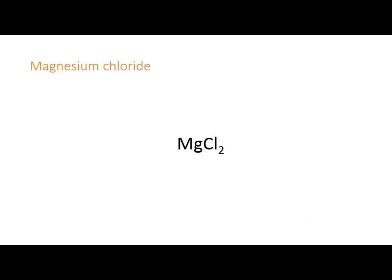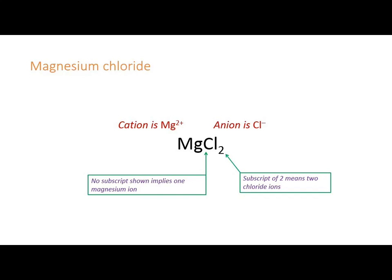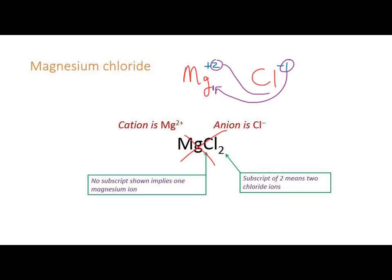Another example: magnesium and chlorine. Find magnesium on the periodic table — it's 2A, so +2. Chlorine is 7A, so −1. Criss-cross: the number of magnesiums needed is 1, the number of chlorines needed is 2. So the formula is MgCl₂.